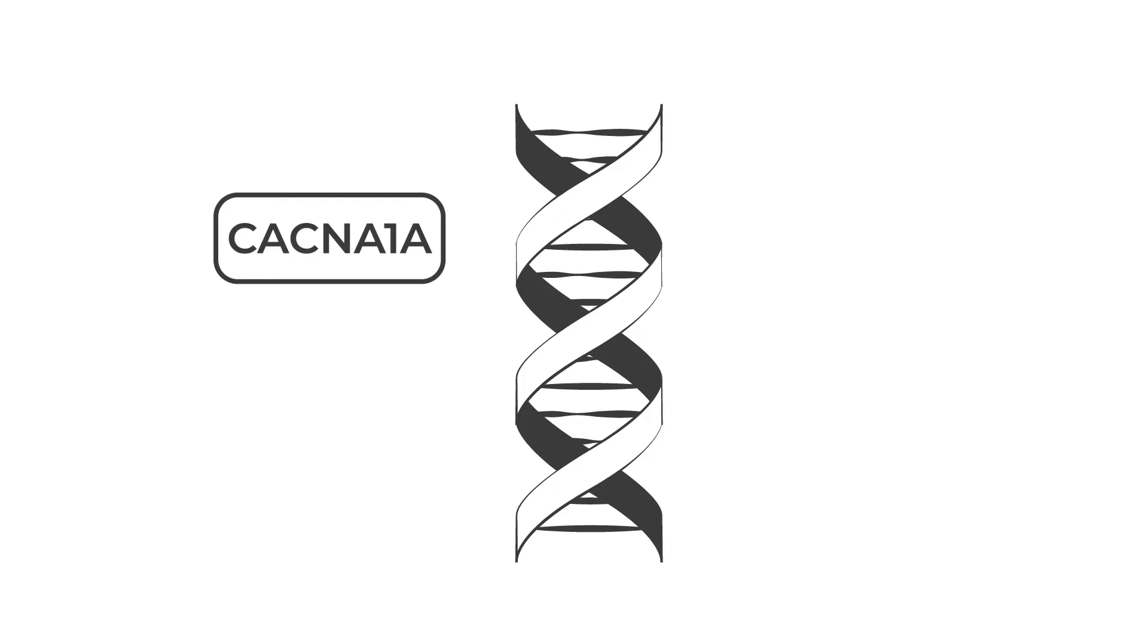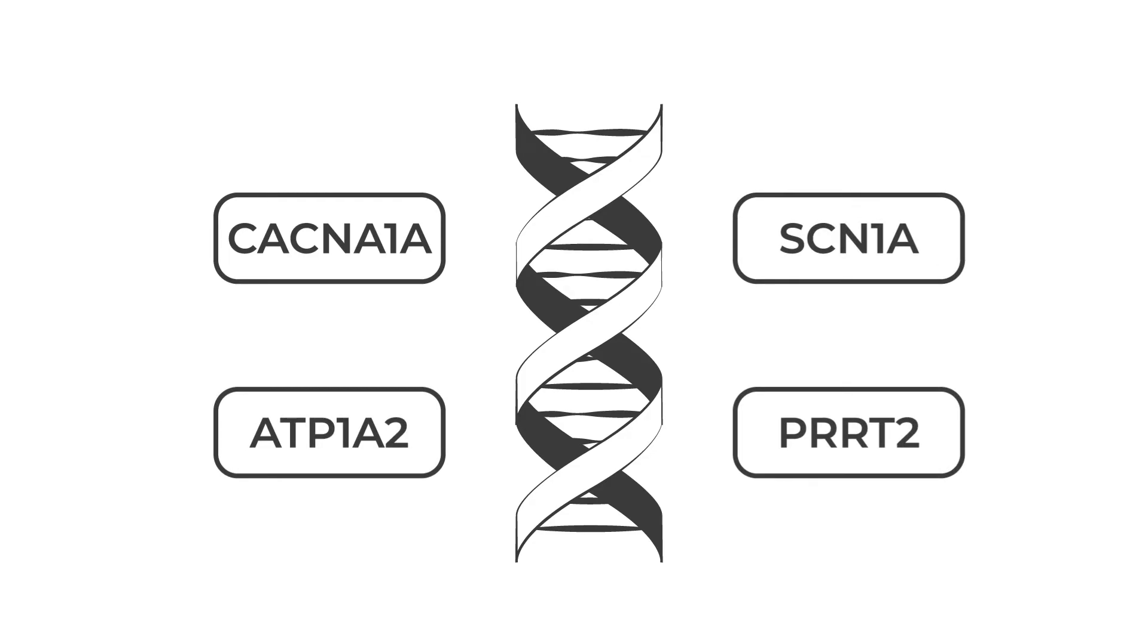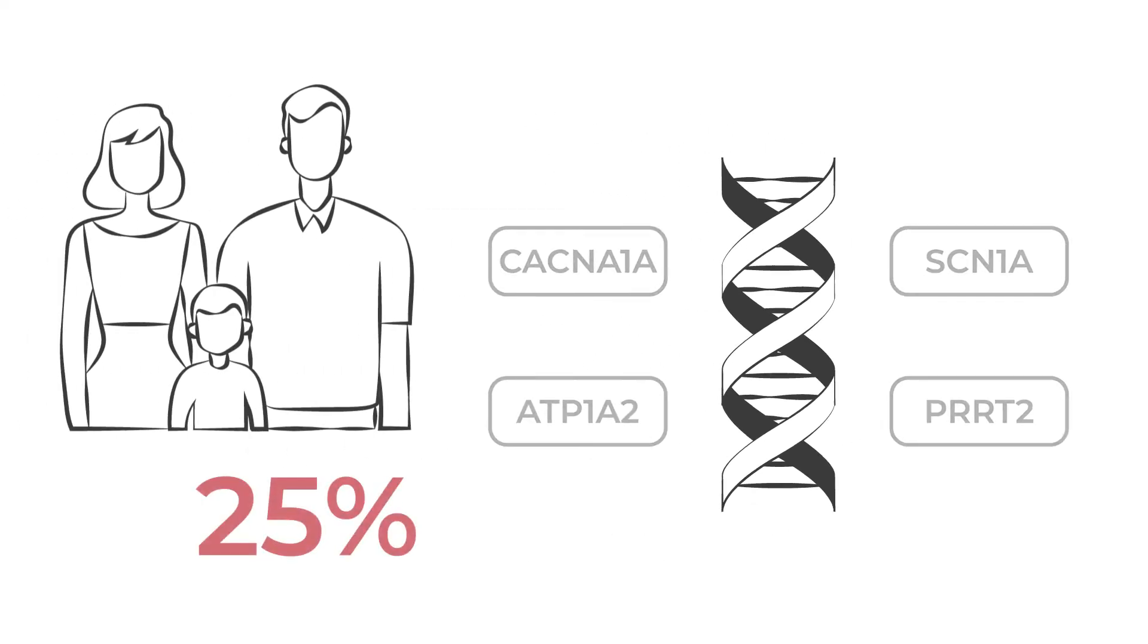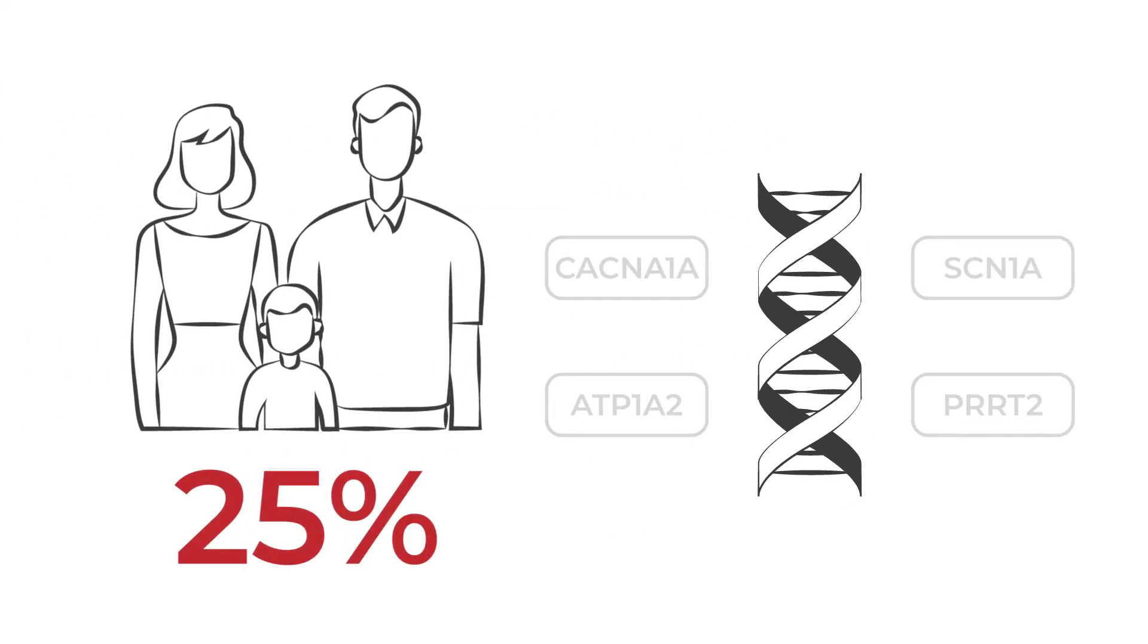CACNA1A, ATP1A2, SCN1A, and PRRT2. At least 25% of families don't have any of these four mutations, leading scientists to believe more genes could be involved.